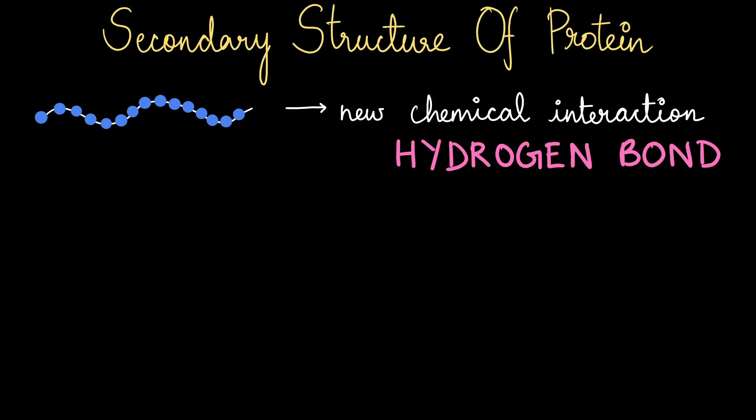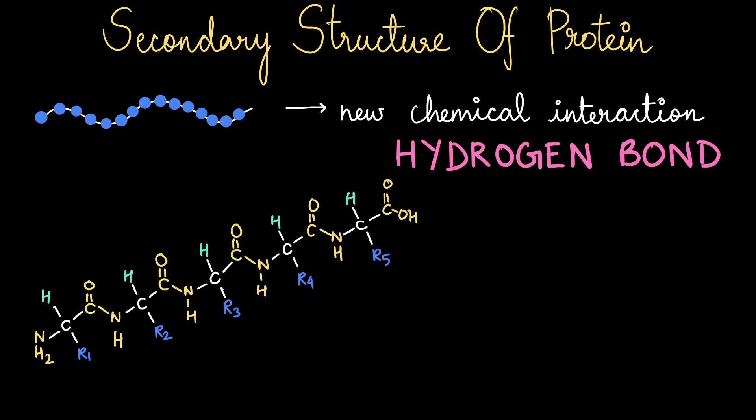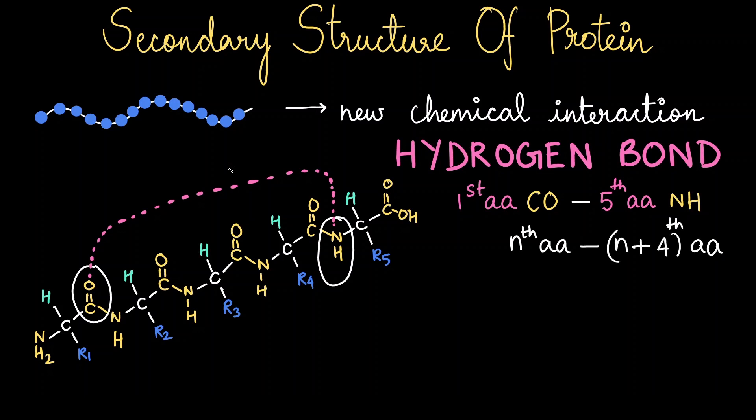At this stage we can say that we have entered the secondary structure of a protein. Here there are five amino acids stitched together. The hydrogen bond is formed between the carboxyl group of one amino acid and the amine group of another amino acid. I can generalize it as the nth amino acid and n plus fourth amino acid, which means the second amino acid is going to interact with the sixth, third with the seventh, and so on.